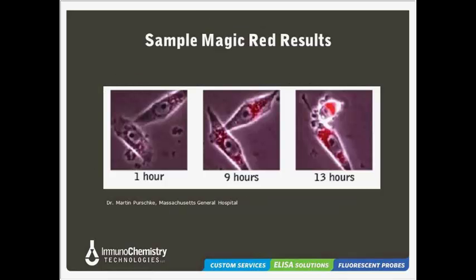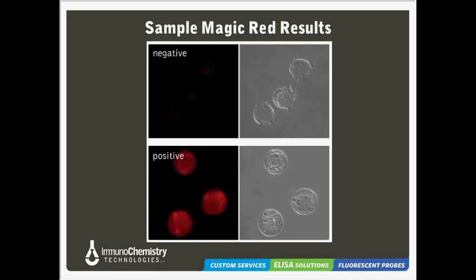Now we'll delve into some sample MAGIC-RED data. In this particular example, rat fibroblasts were seeded in a 12-well plate and exposed to the experimental treatment the following day. MAGIC-RED was added and cells were photographed for 16 hours. What we can really see here is that the red fluorescence becomes brighter as the enzymatic activity progresses over time. This is just a great example of the real-time applications of the MAGIC-RED reagents.